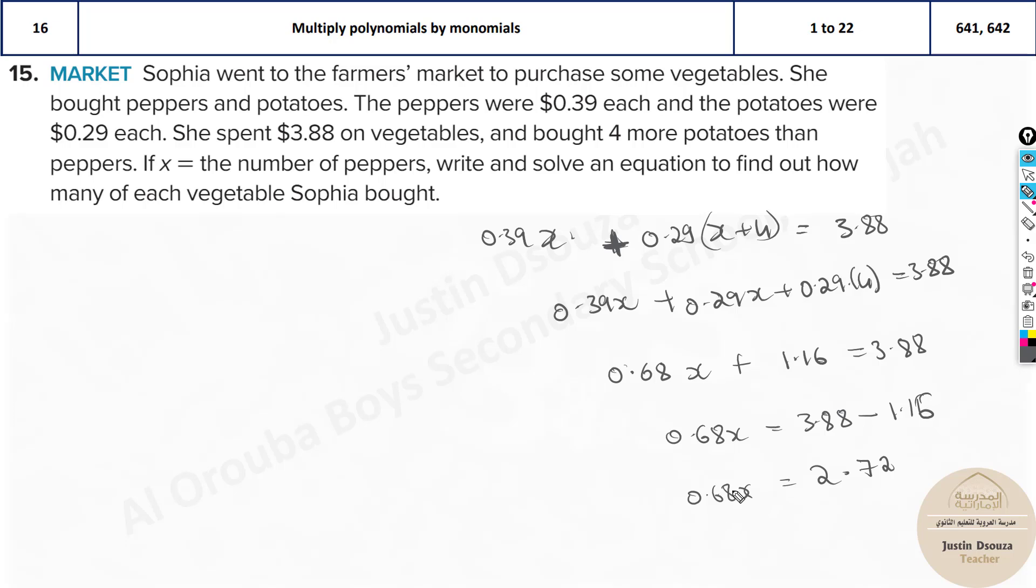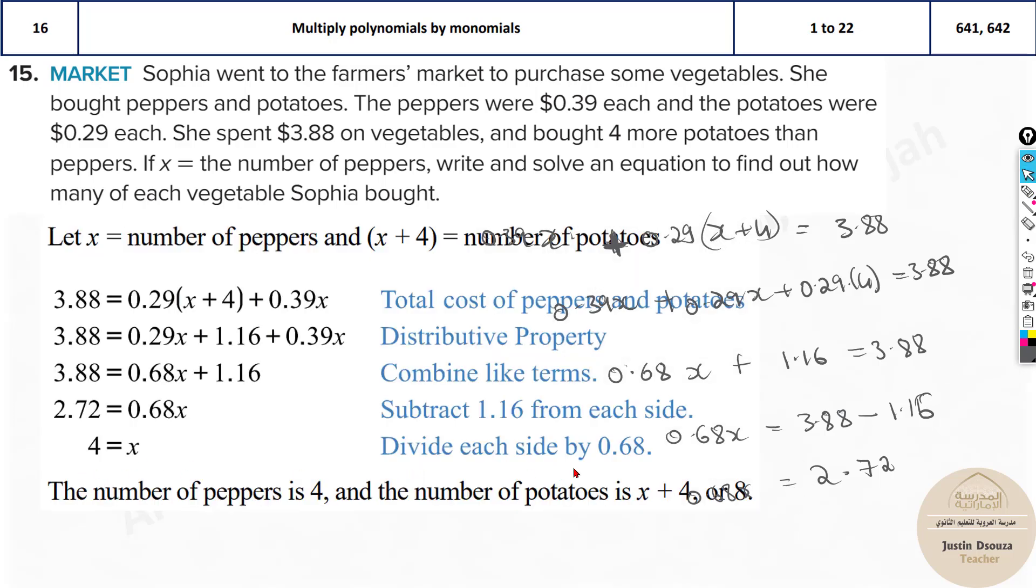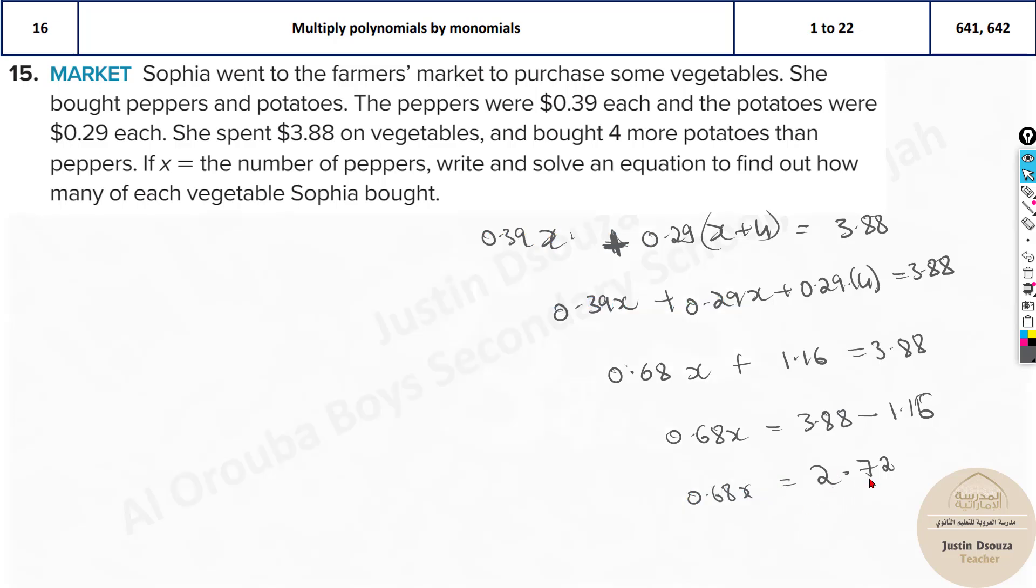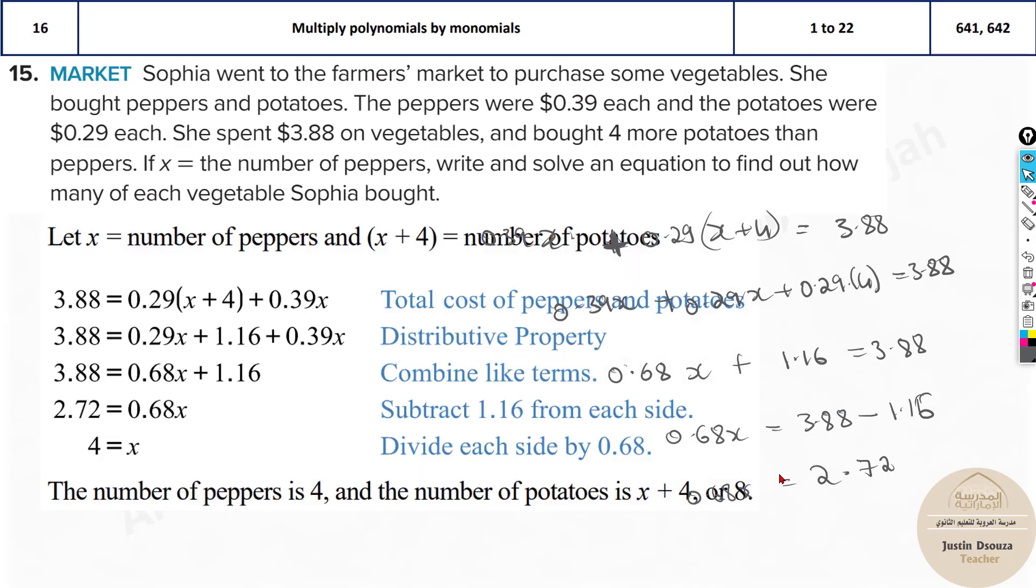Better use calculator. It's about 4. Let's check the answers. Yeah, the answer is 4. You can use the calculator: 2.72 divided by 0.68, that will be 4. We found X value, that is the number of peppers. What is the number of potatoes? Add 4 to it. That's number 8. So she bought 4 peppers and 8 potatoes. That's the answer.